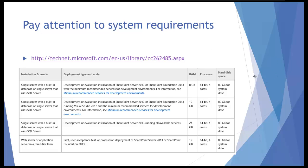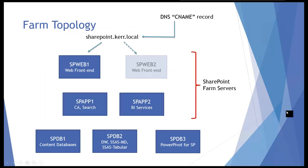Let's talk about the environment we're actually going to build. The farm topology shown here is really typical of an initial medium farm built for a BI deployment at a commercial organization that has a fair number of people accessing the farm. The reason to set up a farm like this — with multiple servers doing different roles — is because it leads to a great deal of scalability and enhanced manageability. We can control which server runs which service, and as certain services demand more resources, we can add additional servers into the farm.